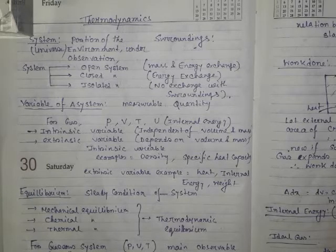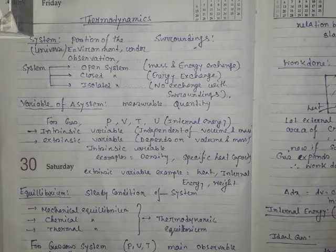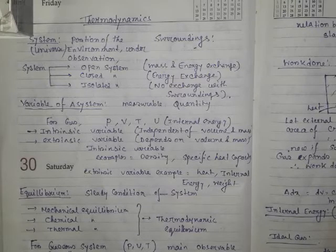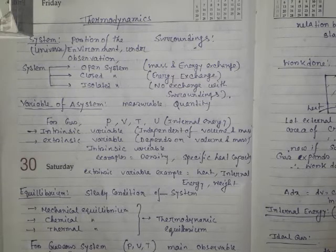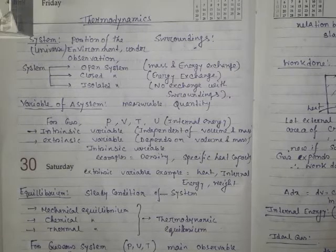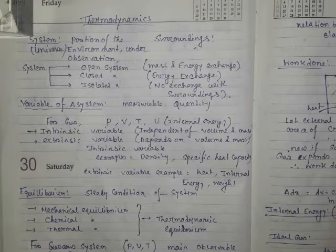Variables can be categorized into two types: intrinsic variables and extrinsic variables. Intrinsic variables are independent of the size, mass, or volume of the system. For example, density of a cup of water is exactly the same as density of water in a big jar — it does not matter the volume. Similarly, specific heat capacity of water is the same in both.